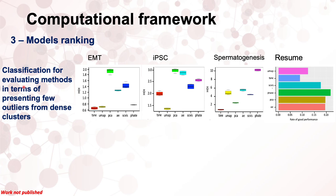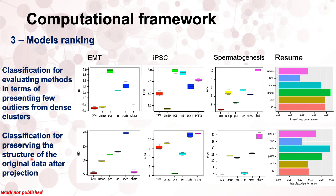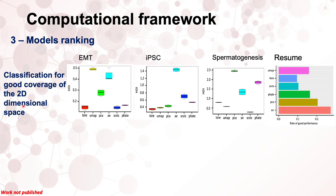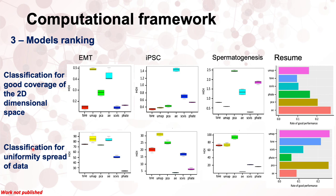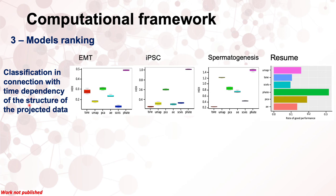If the goal of classification is to evaluate the projected data in terms of presenting few outliers from dense clusters, then PHATE, Autoencoder, and PCA are the best methods. If the classifier requires preserving the structure of the original data after projection, then PHATE and SCVS are the best methods. If good classification refers to good coverage of the low-dimensional space, then Autoencoder is the optimal method. For visually uniform spread of classes in the projected space, t-SNE, UMAP, and PCA are the prominent methods. For time dependency of the projected data structure, PHATE is the foremost method.